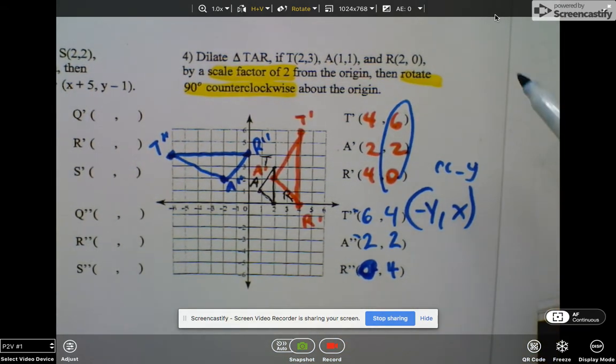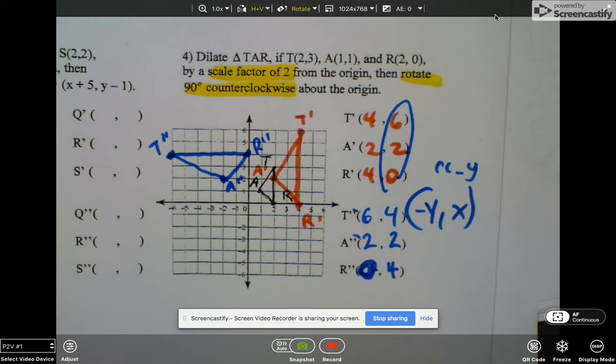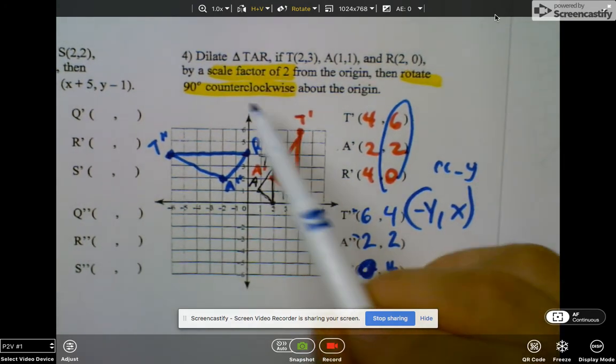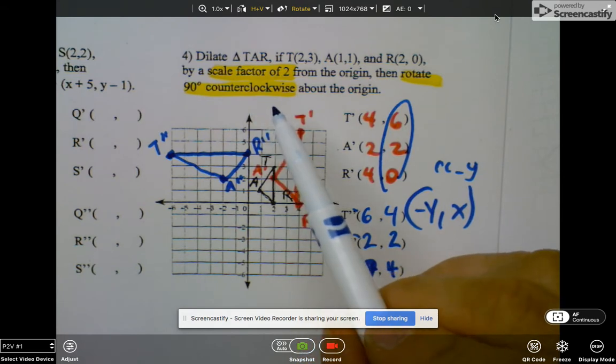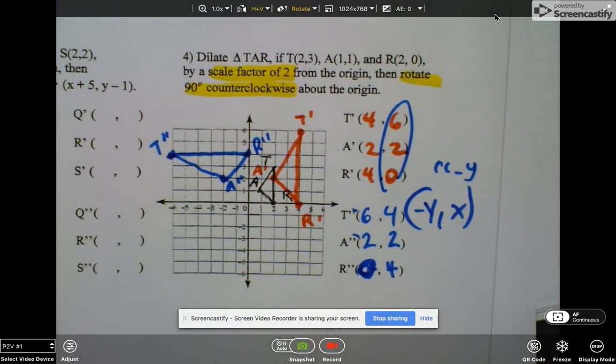All right, so again, you should be really happy because you just took a figure and you did a scale factor of two. And then after you had that scale factor of two, you rotated 90 degrees counterclockwise. So again, I hope you enjoyed this video. This is brought to you by period.